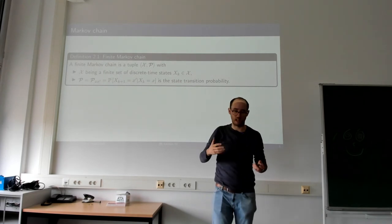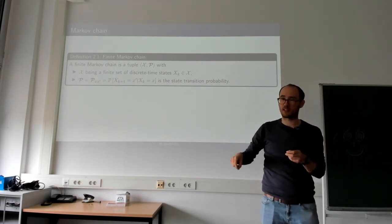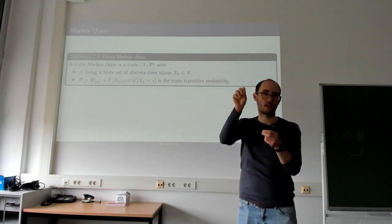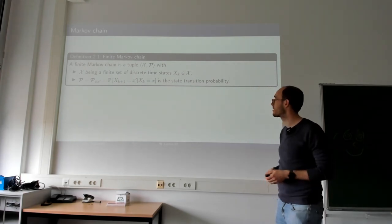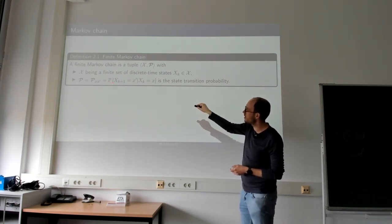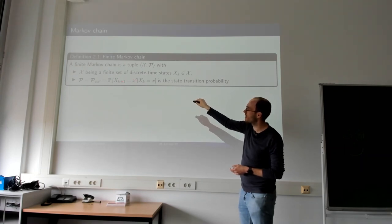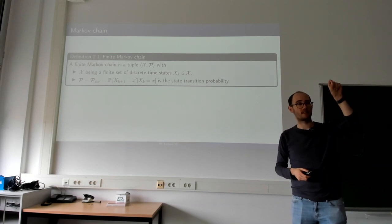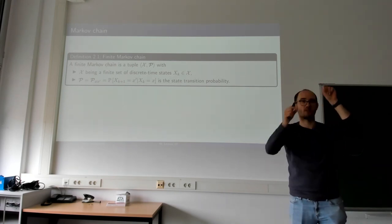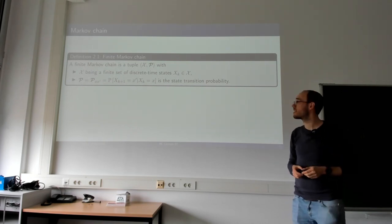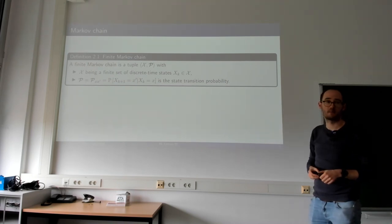The state transition probability matrix, curly P, describes the probability of starting in state x at time step k and transitioning to the next state x' at time step k+1. It indicates, if our chess piece is at some position, what is the probability that it will move in each direction. It tells us the dynamics of the system we're operating with.